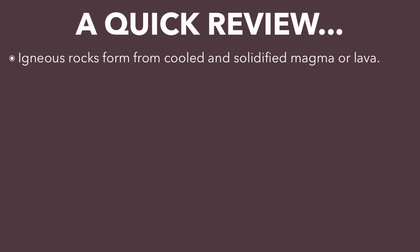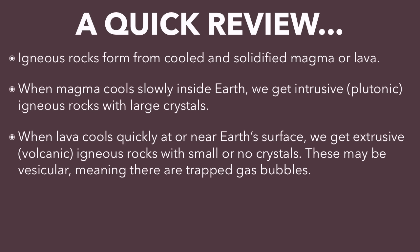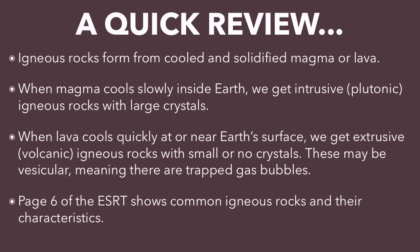So let's recap. Igneous rocks form from cooled and solidified magma or lava. When it cools slowly inside the earth, we get intrusive — sometimes called plutonic — igneous rocks, and they will have large crystals. When lava cools quickly at or near the surface, we get extrusive rocks, also called volcanic, that will have small or no crystals, and they may be vesicular, meaning they have some trapped gas bubbles. Page six of the reference tables shows our common igneous rocks and their characteristics, and we'll be studying that chart in the coming days.